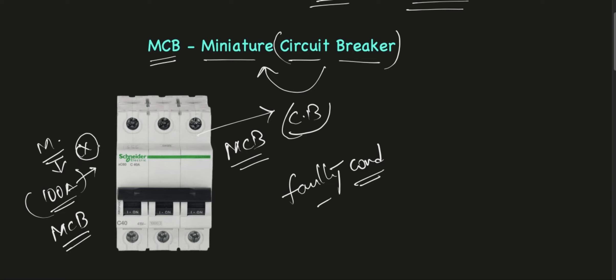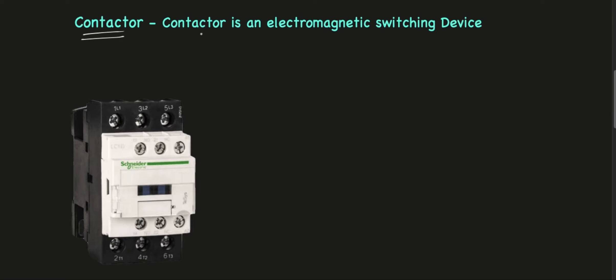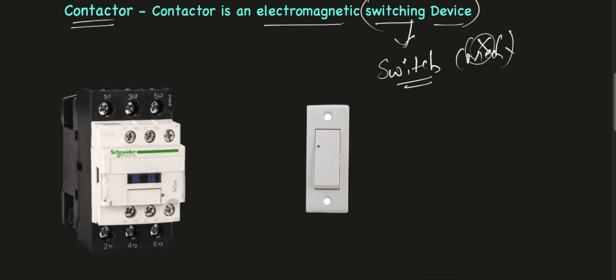Now let us talk about a contactor. Contactor is an electromagnetic switching device. A contactor simply acts as a switch but it is not a mechanical switch. For example, this is also a switch but it's a mechanical switch. Contactor is not like a mechanical switch.